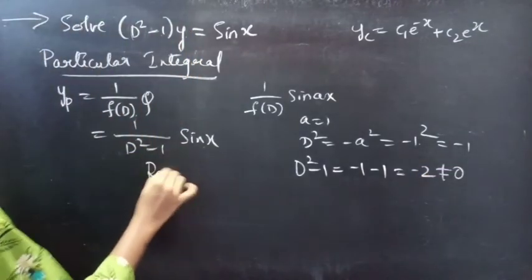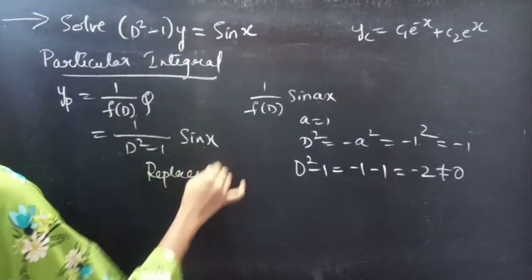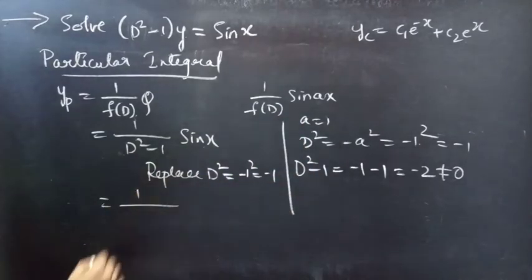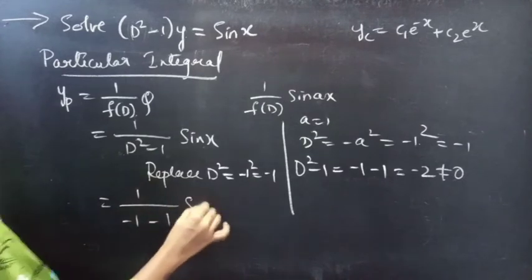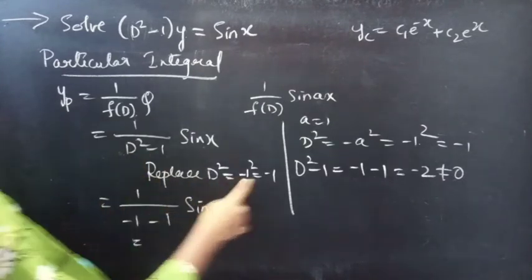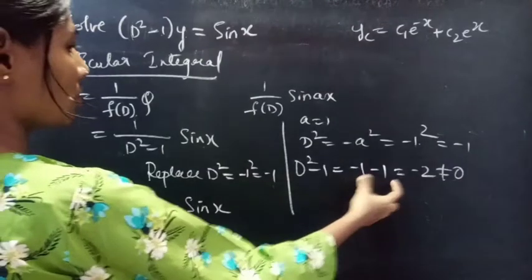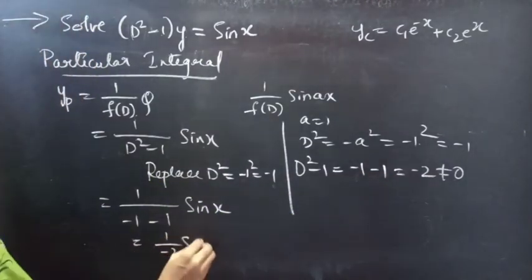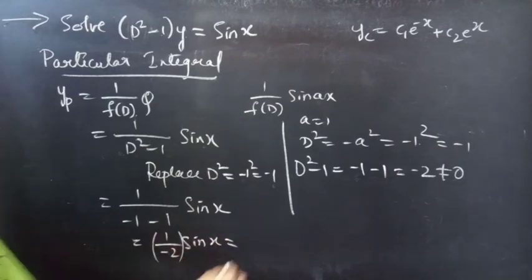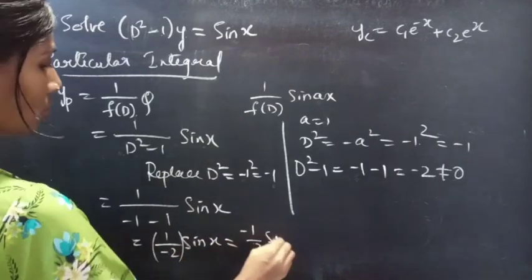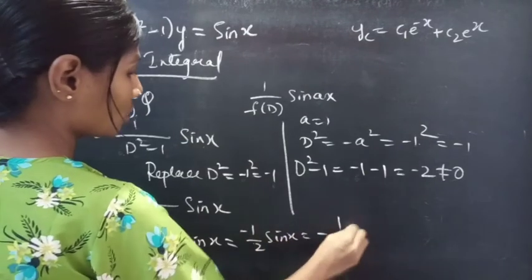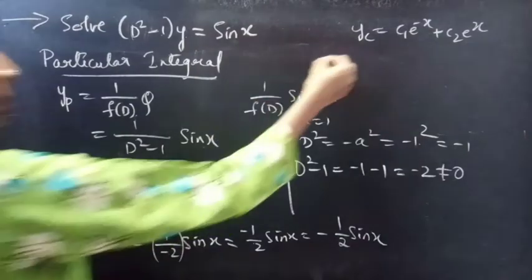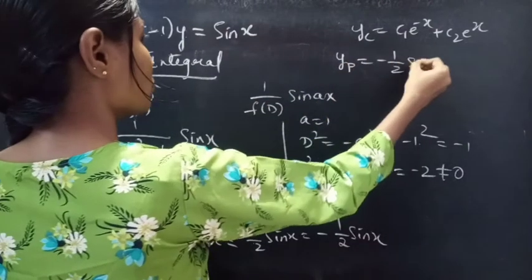So we replace D² by -1 in the denominator: 1/(-1 - 1) · sin x = 1/(-2) · sin x = -1/2 · sin x. Therefore yp = -1/2 · sin x.